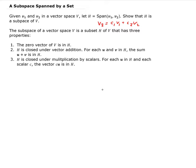We need to verify that H is a subspace of V, so we have to check each property. Let's start by showing that the zero vector of V is in H. The zero vector can be rewritten as zero times V1 plus zero times V2, which shows it is a linear combination of V1 and V2. Therefore, the zero vector is in H.